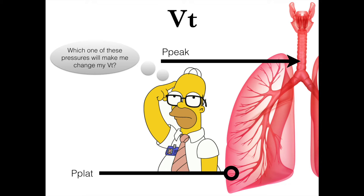A less looked-at pressure is the P-plat, the plateau pressure. This is a static pressure and it represents the pressure that's actually in the alveoli. When we look at that pressure, we can tell if the patient is going to be prone to barotrauma, or if we're causing injury to the lung by overall too much exertion of force. The P-peak is the big main airways and the P-plat is the lower airways. To measure it, we have to do something called an I-hold — we hold pressure in the lungs for all the air to stop moving, and then we can tell what that pressure actually is.